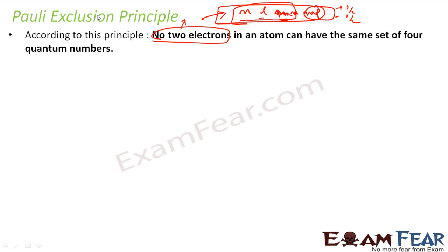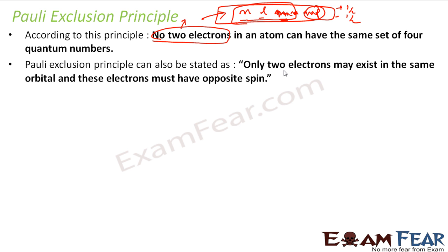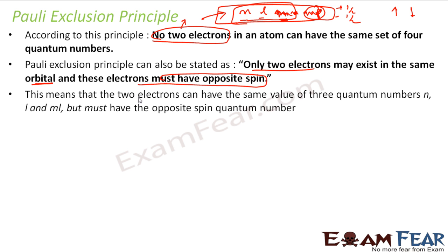Pauli's exclusion principle also states that only two electrons can exist in the same orbital, and these electrons must have opposite spin — one clockwise and one anticlockwise. Two electrons can share the same values of n, l, and m, but they must have opposite spin quantum numbers.